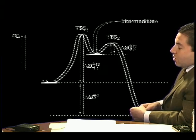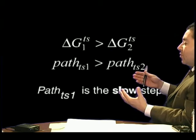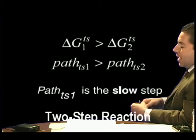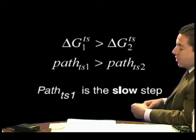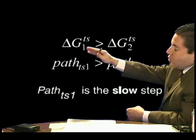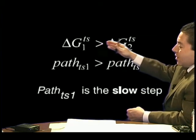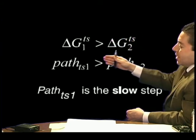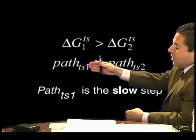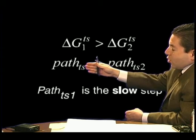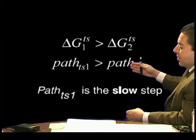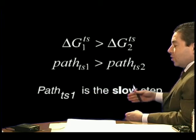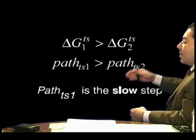One of the interesting things is that if this reaction energy profile reflects a two-step reaction, we can see in our notes that the delta G1 of transition is greater than delta G2 of transition. That means that the path of transition is slower, takes a longer time than the second path, and the path to transition state 1 is the slow step in this two-step reaction, or the rate-determining step.